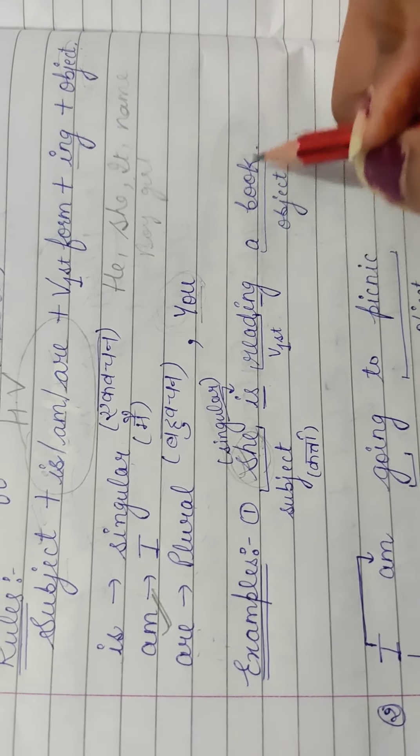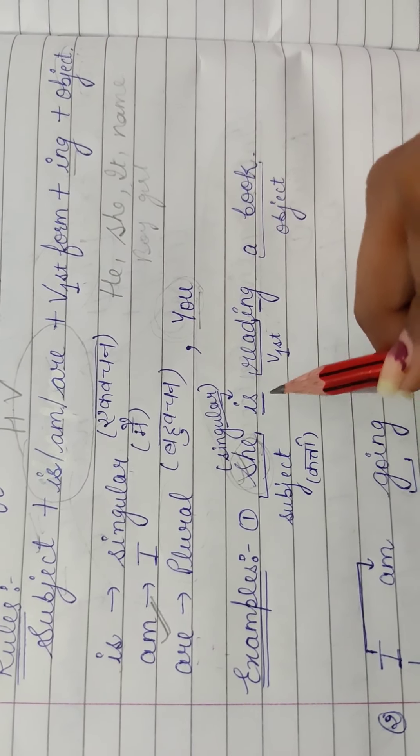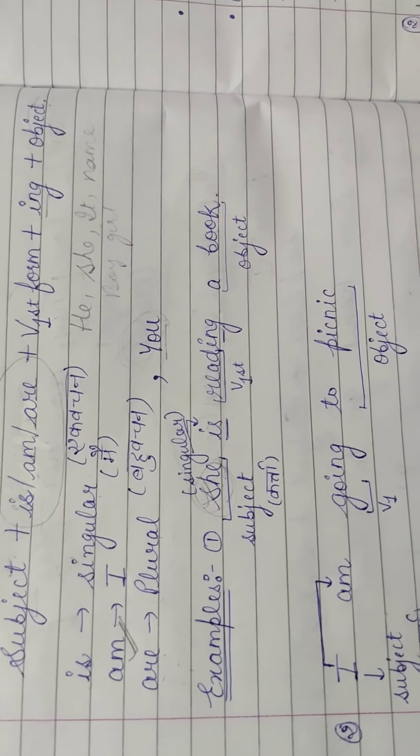Samaj mein aaya, sentence kiya se banaya jatay hai? To aapko milayega is tariqe se: jis mein maine likha she, dash, a book, or bracket mein maine dal diya read. To aapko likhna hooga, she ke saath is aata, to is laga diya, or read ke saath ing aajayega. To is tariqe se fill up fill karoge.